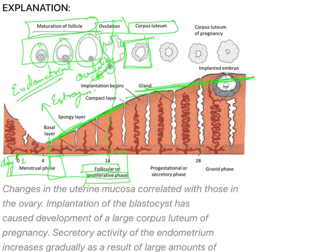The ruptured follicle filled with blood is known as corpus hemorrhagicum, while the corpus luteum forms later as a yellowish structure. The corpus luteum releases two important hormones: progesterone, which is very important for maintaining the thickness of the endometrium, and estrogen, which helps in the proliferation and strengthening of the endometrial thickness.